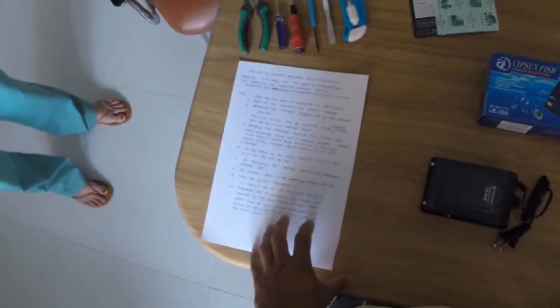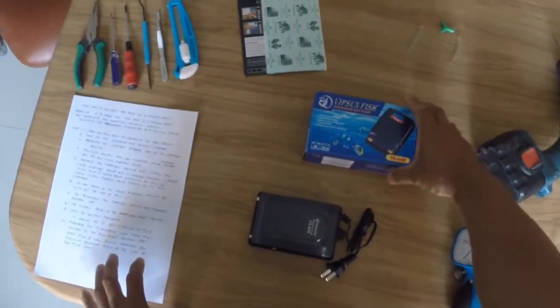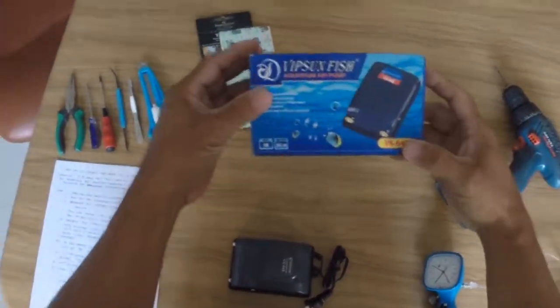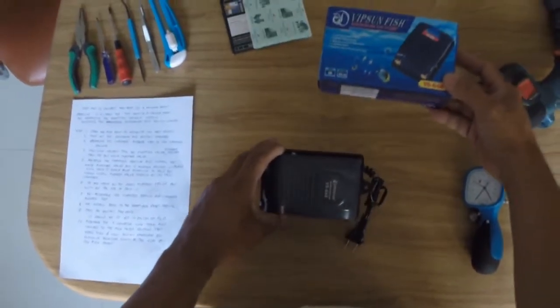Today we will show you how to convert a fish pump into a vacuum pump. Basically this is a fish pump that you can buy in the local market where they sell the aquariums.